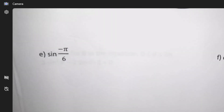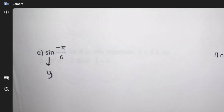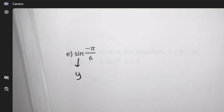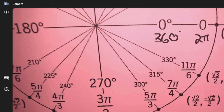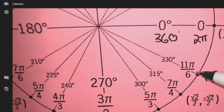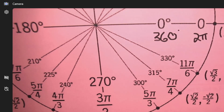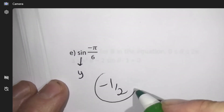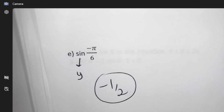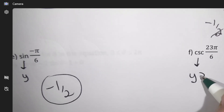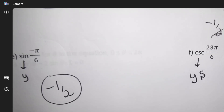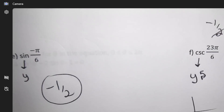The next one is a sine question, so I need to get a y value — that's the 'what.' The 'where' is: where is negative π/6? You go down to here — negative π/6 — and the y-coordinate is negative one half. For cosecant, you take the y but flip it — that's the 'what.' Then you figure out the 'where.'